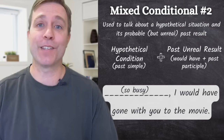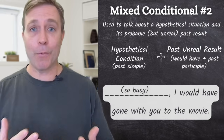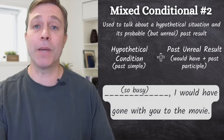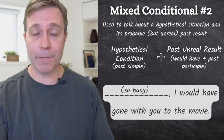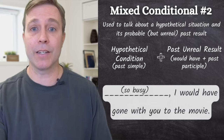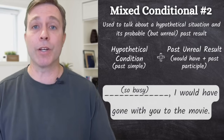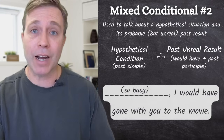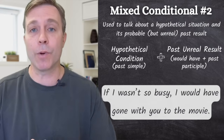Another quiz: complete the sentence using the phrase so busy, followed by I would have gone with you to the movie. The second part is the past unreal result, so the first part must be our hypothetical condition using the past simple. The answer is: if I wasn't so busy, I would have gone with you to the movie.